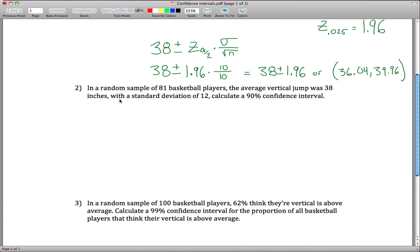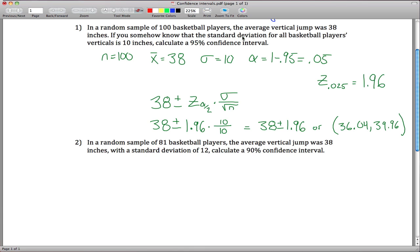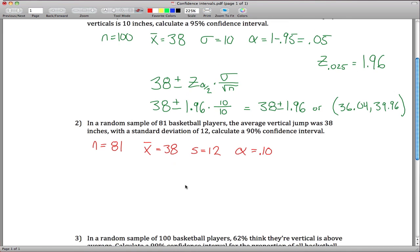And the second one, it's pretty similar to the first one. The main difference is that we don't know sigma, we don't know the population standard deviation, we just know the sample standard deviation. So n changes, x-bar stayed the same, the sample average is still 38, but now the standard deviation is not sigma, it's s because it's a sample standard deviation. And our alpha, it looks like that changed too. Now that's only 90% instead of 95%, so alpha is 0.10.